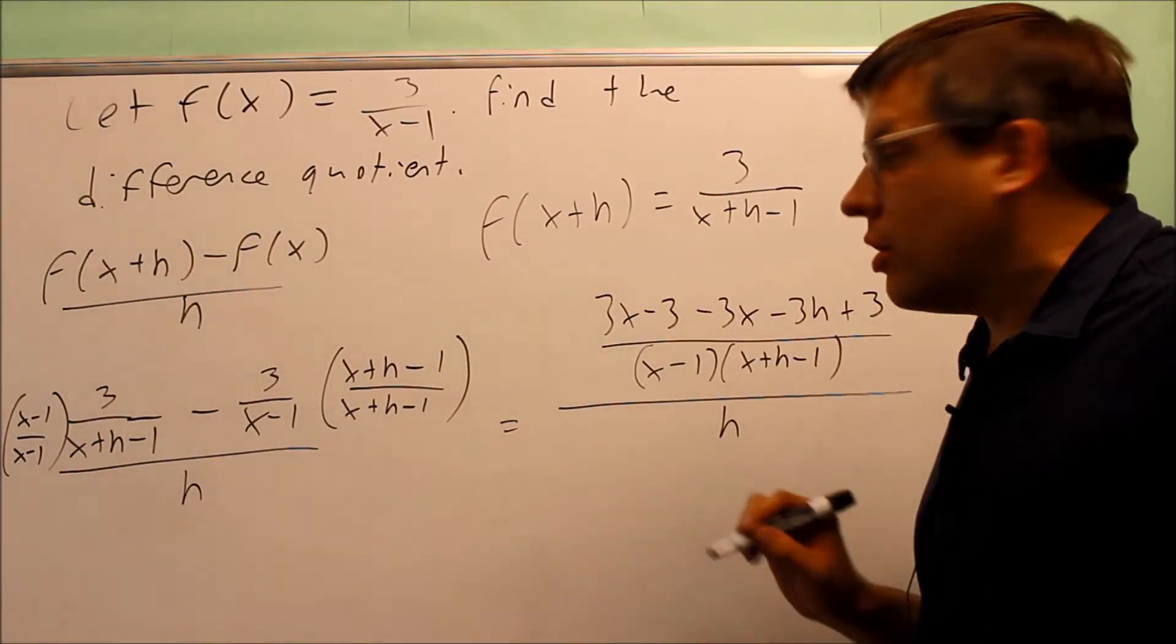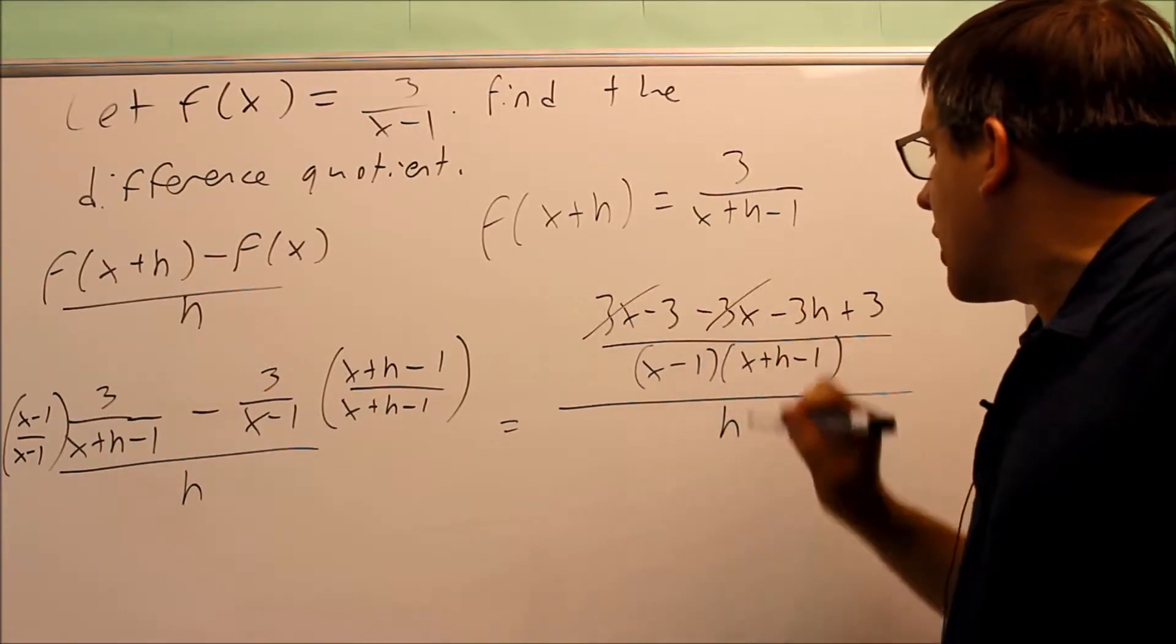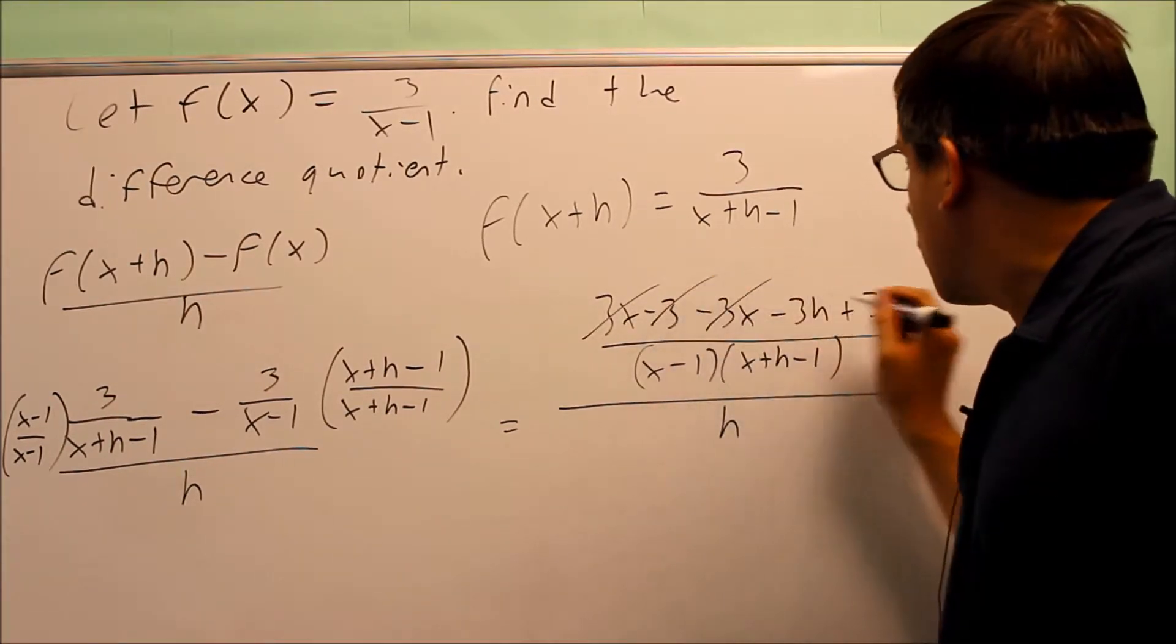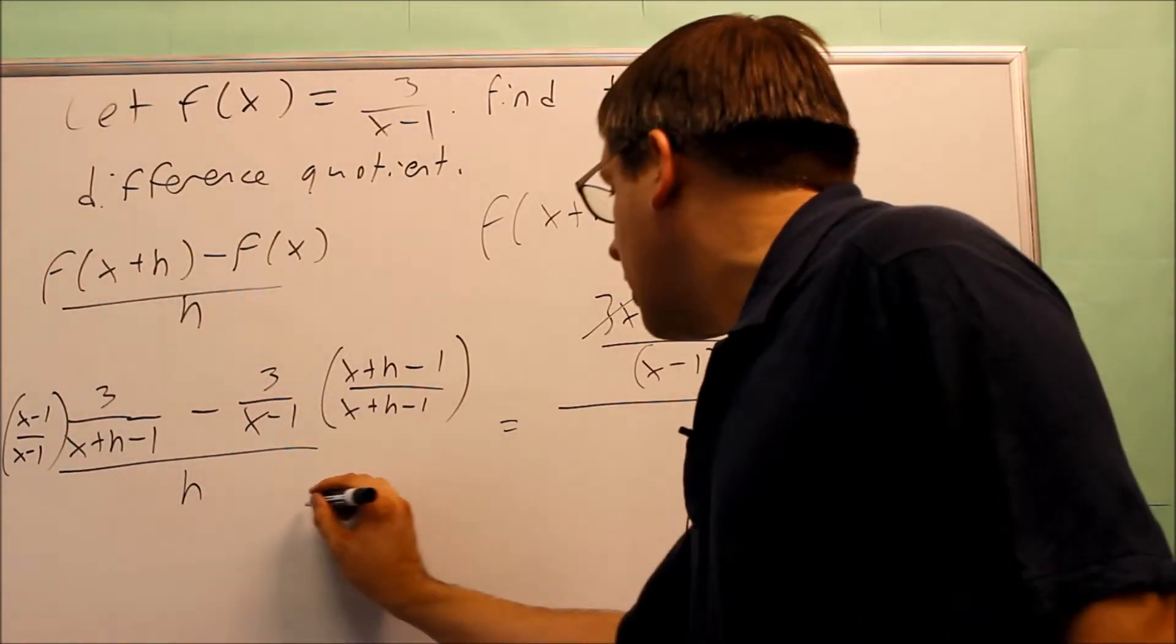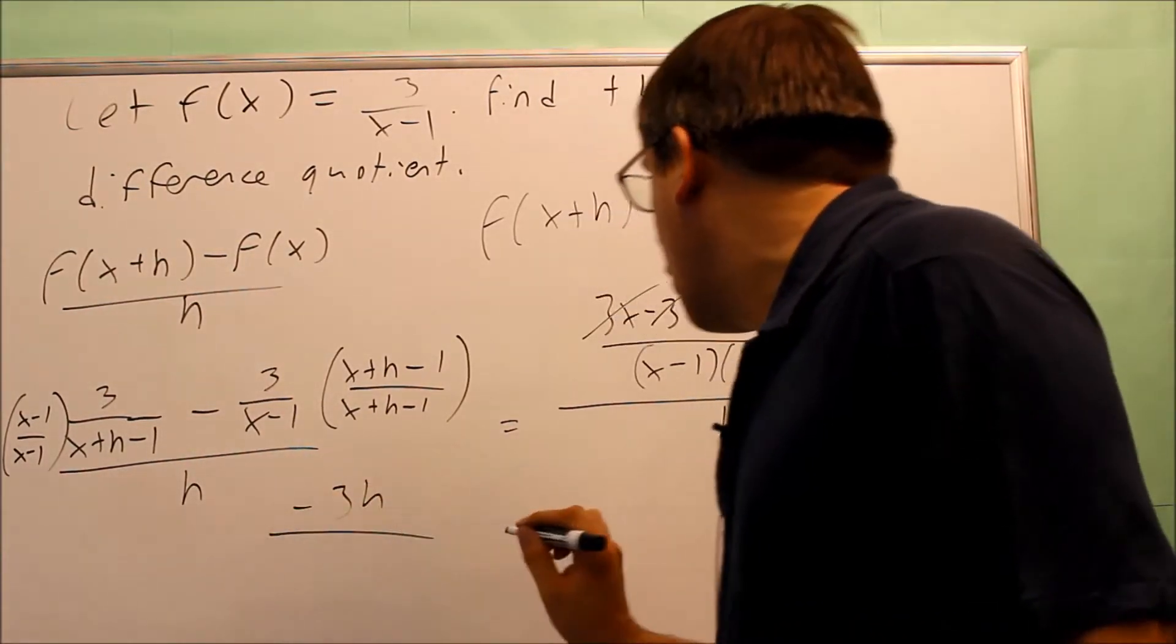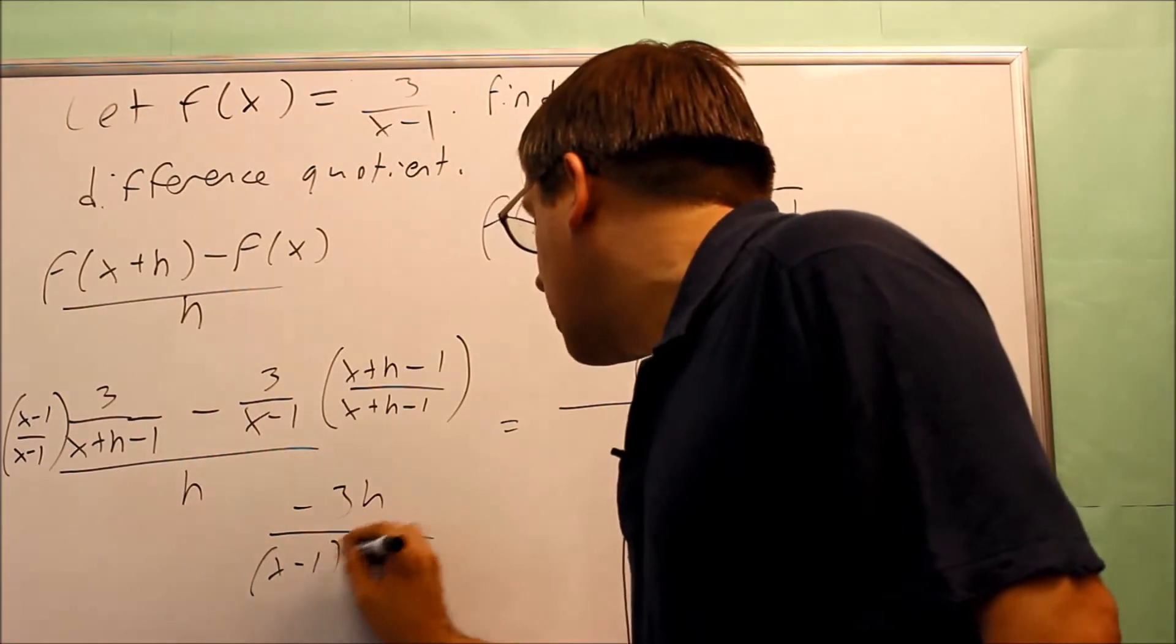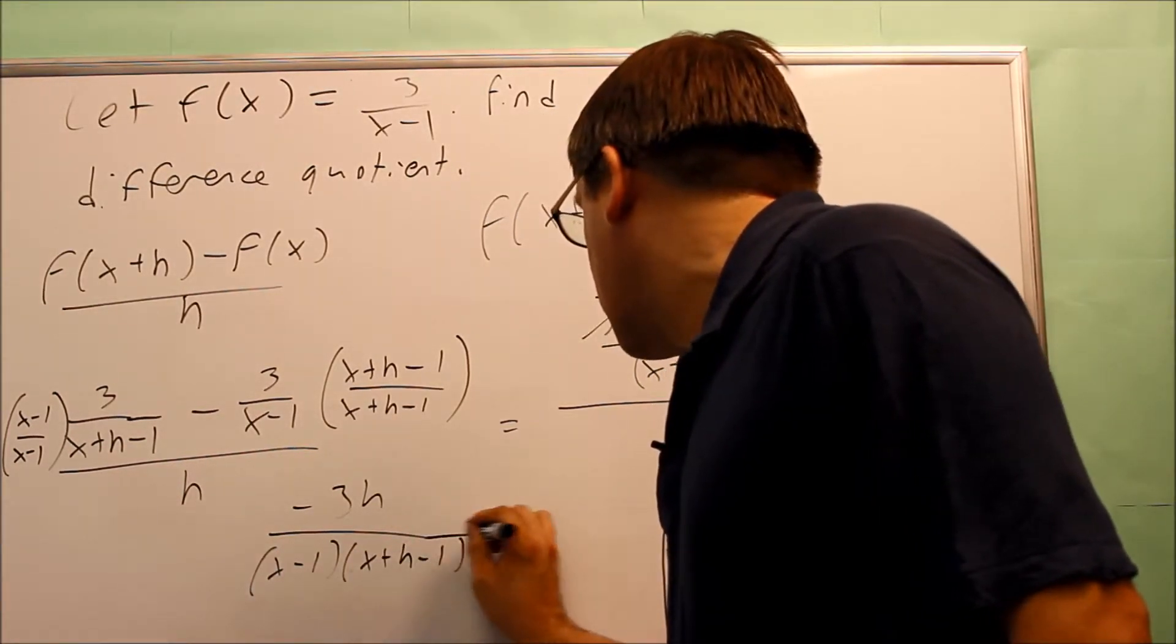Now I can do some cancellation here. I can do 3x and negative 3x, that cancels. Negative 3 and 3, that's going to cancel. And so I'm left with, and I rewrite it down here, negative 3h over x minus 1, x plus h minus 1 here.